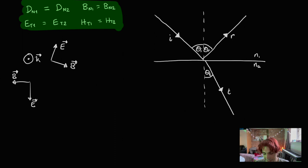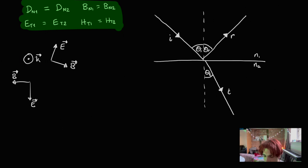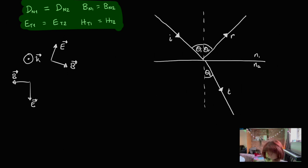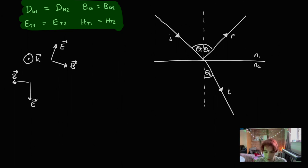Whenever we have lots of different possibilities for the orientations, we can always resolve these possibilities into essentially two axes. This is what gives rise to two different types of propagating electromagnetic radiation when talking about boundary conditions — we call this the polarisation of the light. In reality, light coming in will probably be polarised in all sorts of different directions. However, we can always resolve any unpolarised light into two different orthogonal directions.